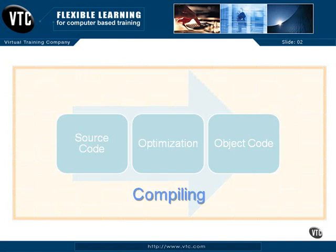When we're compiling, the source code goes into the compiler. It is optimized and turned into some standard code that the compiler has within it, which produces object code.